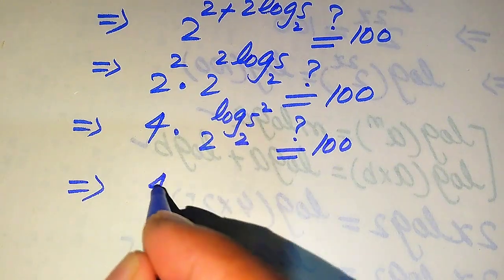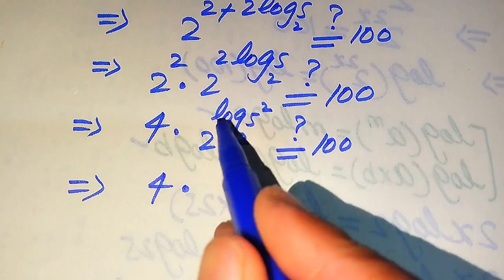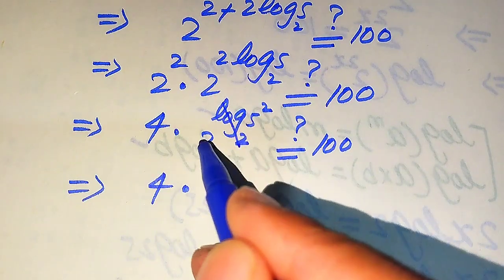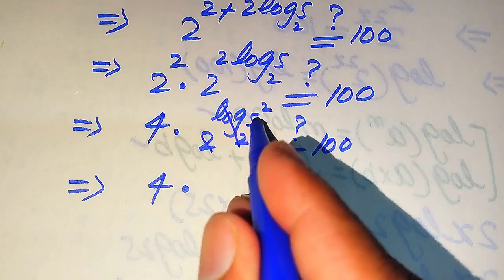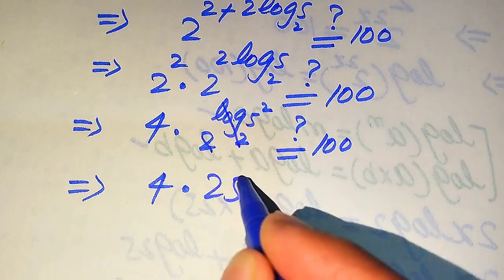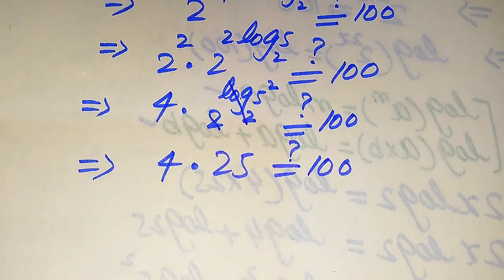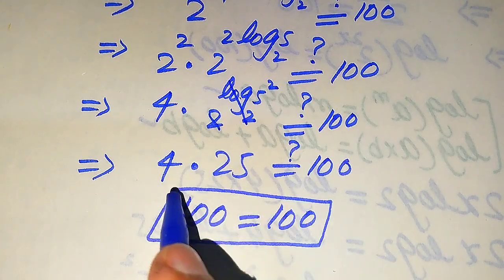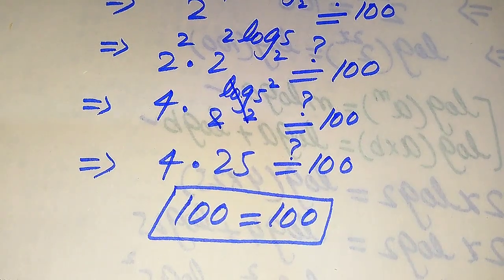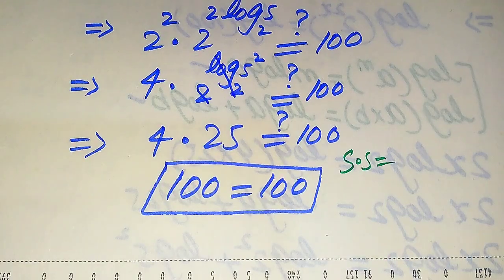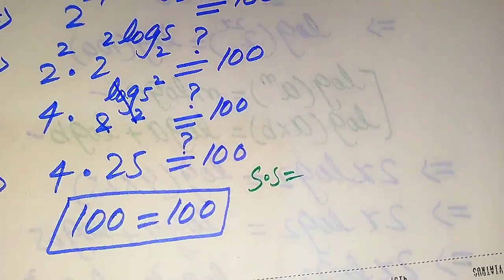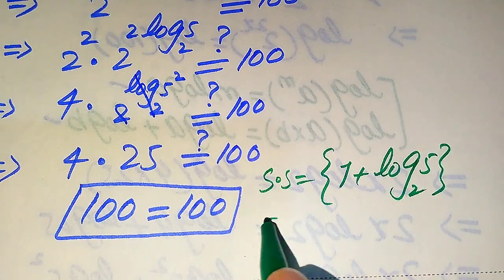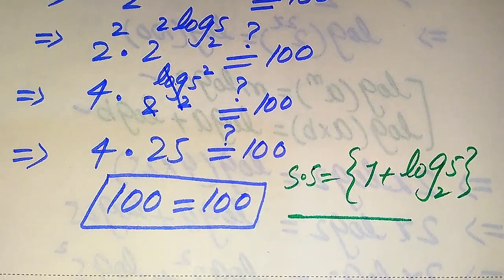Since the base of the expression is 2 and the base of the logarithm is also 2, they cancel each other out, leaving just 5 squared, which equals 25. So we have 4 times 25, which equals 100. Both sides are equal, confirming the value of a satisfies the original equation. The final solution is a equals 1 plus log base 2 of 5. Thank you for watching — please subscribe to my channel for more videos.